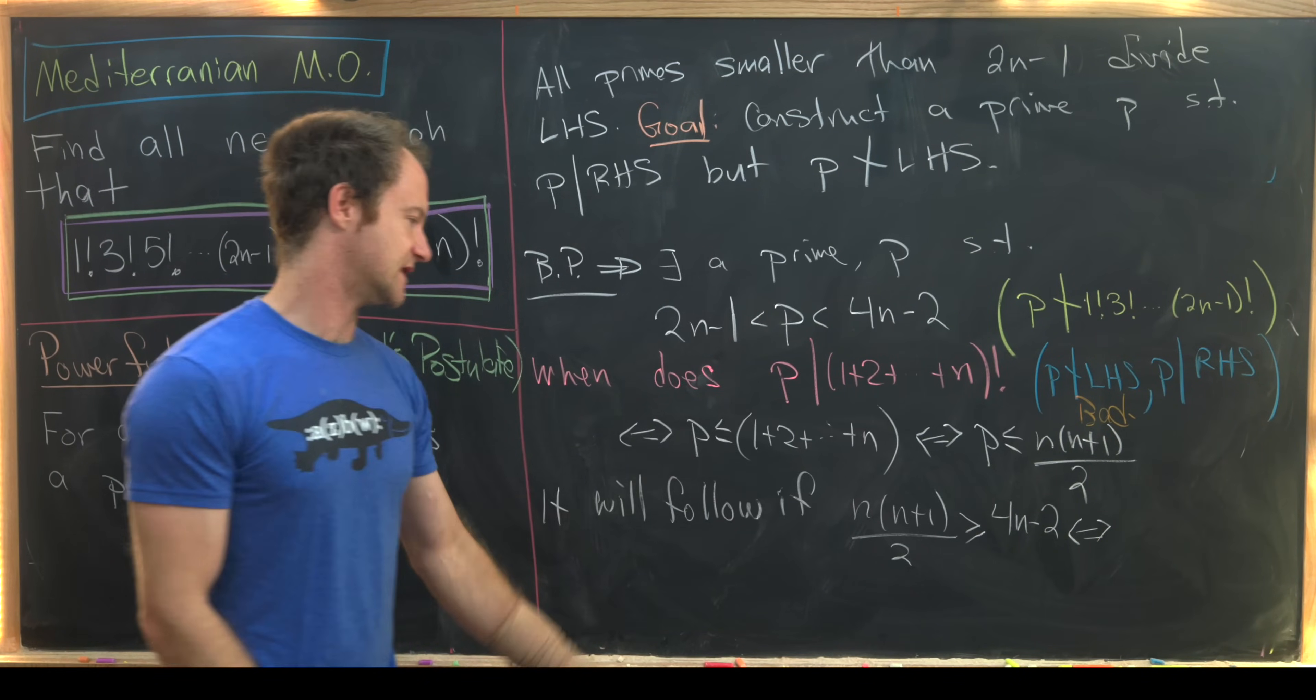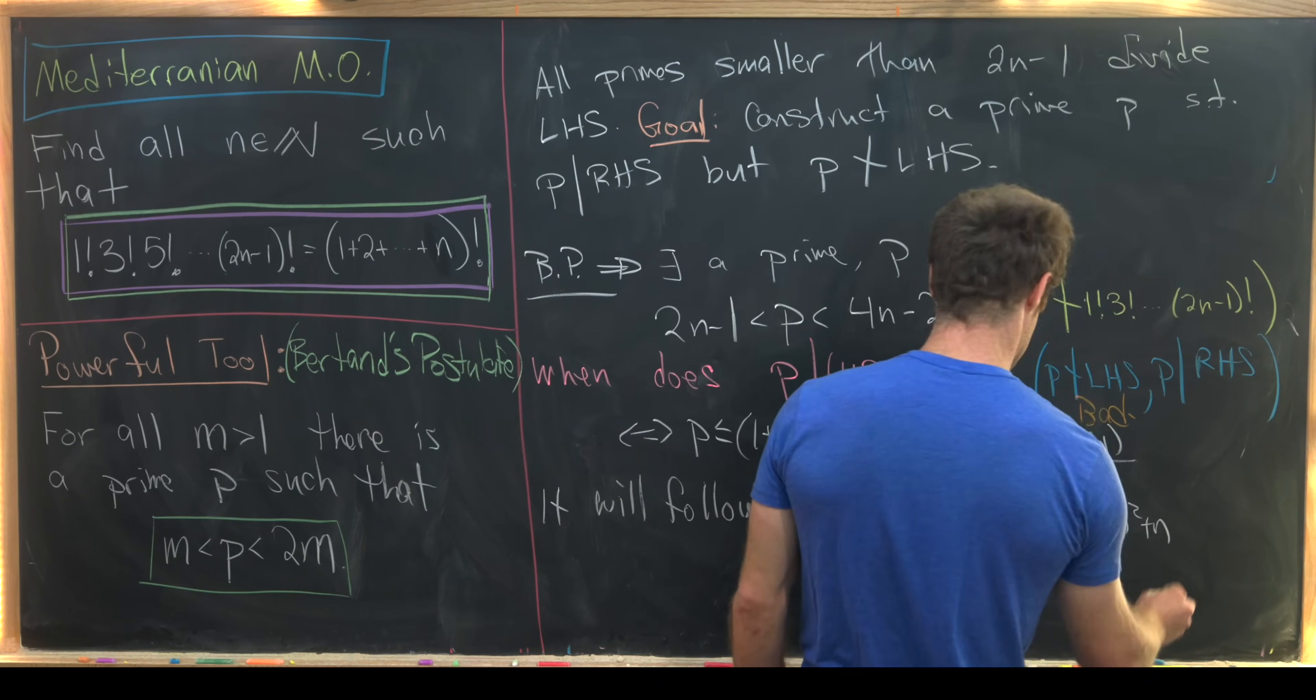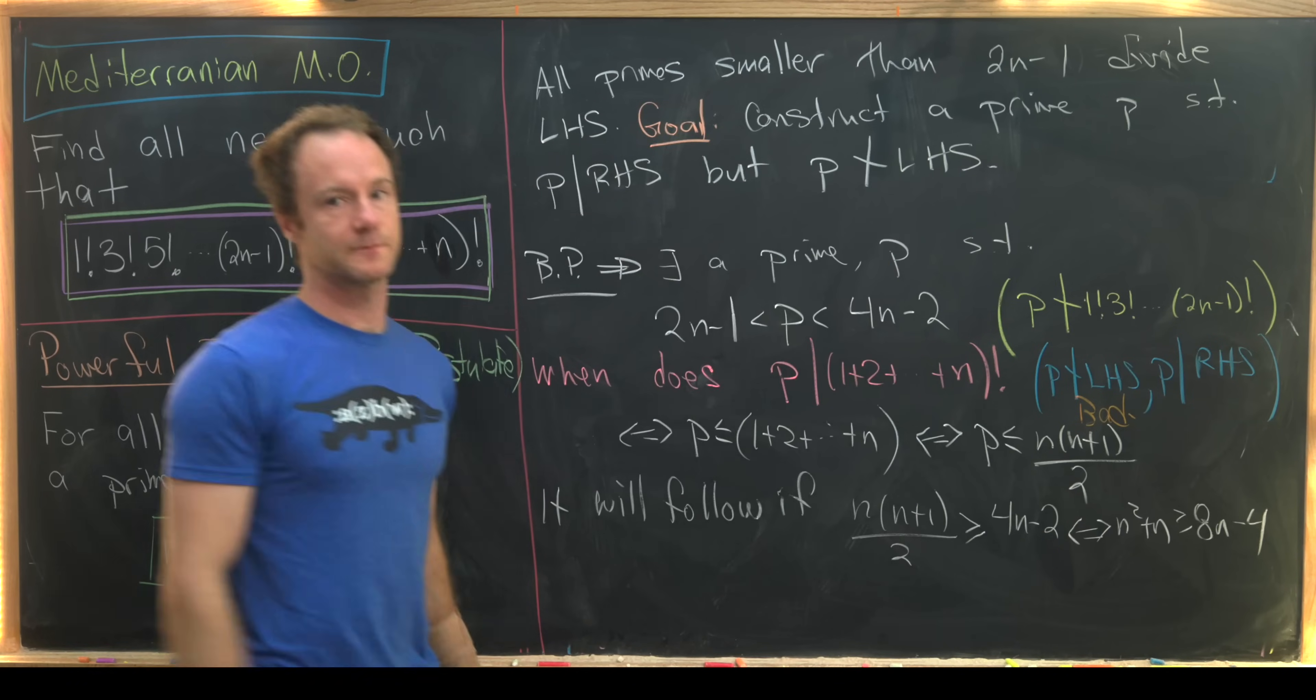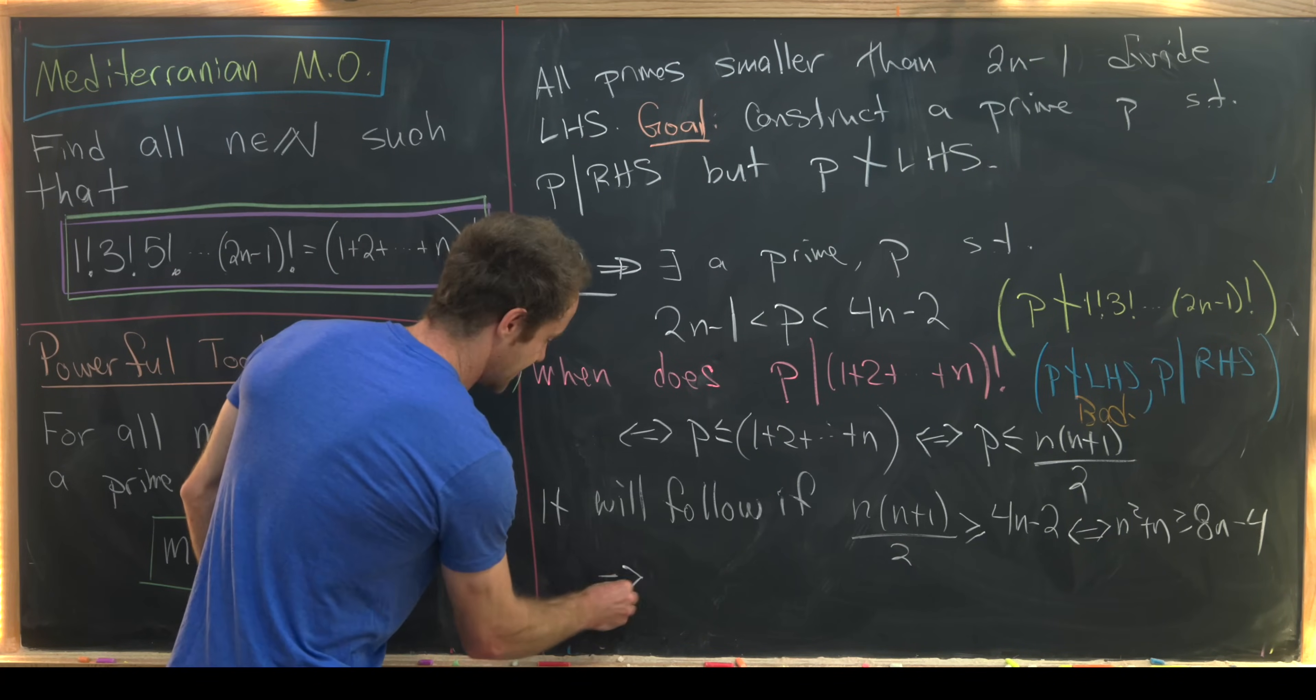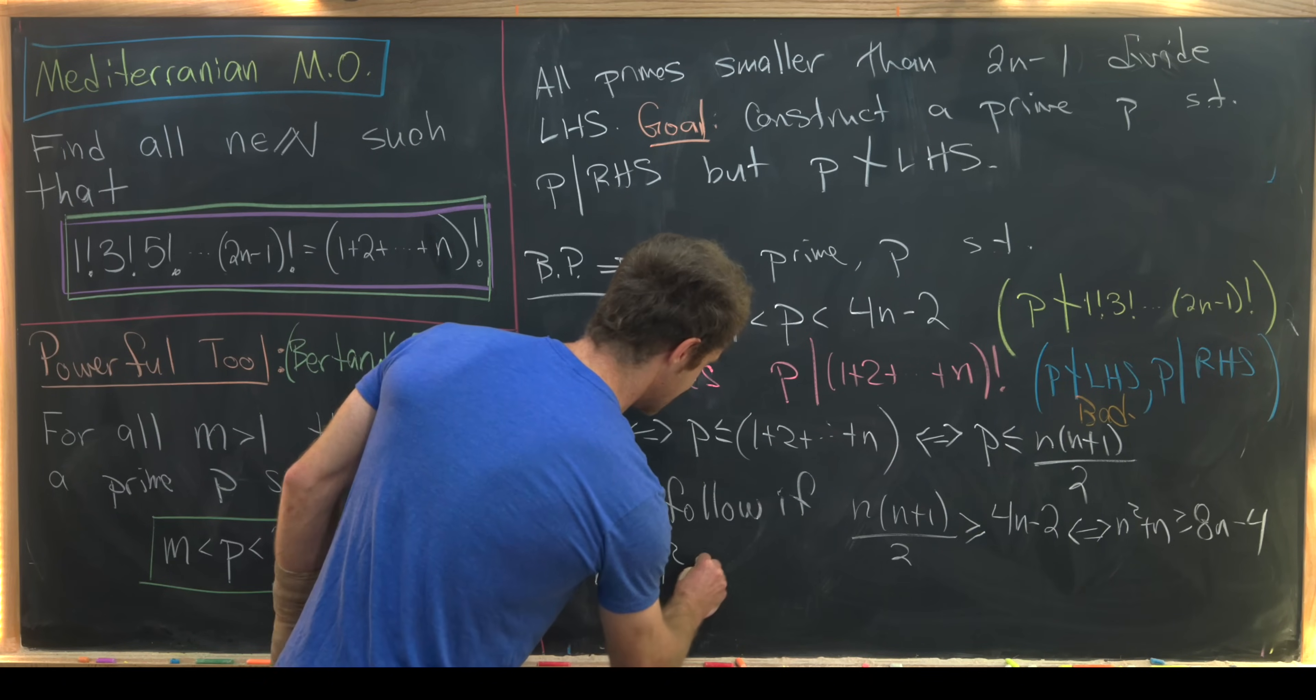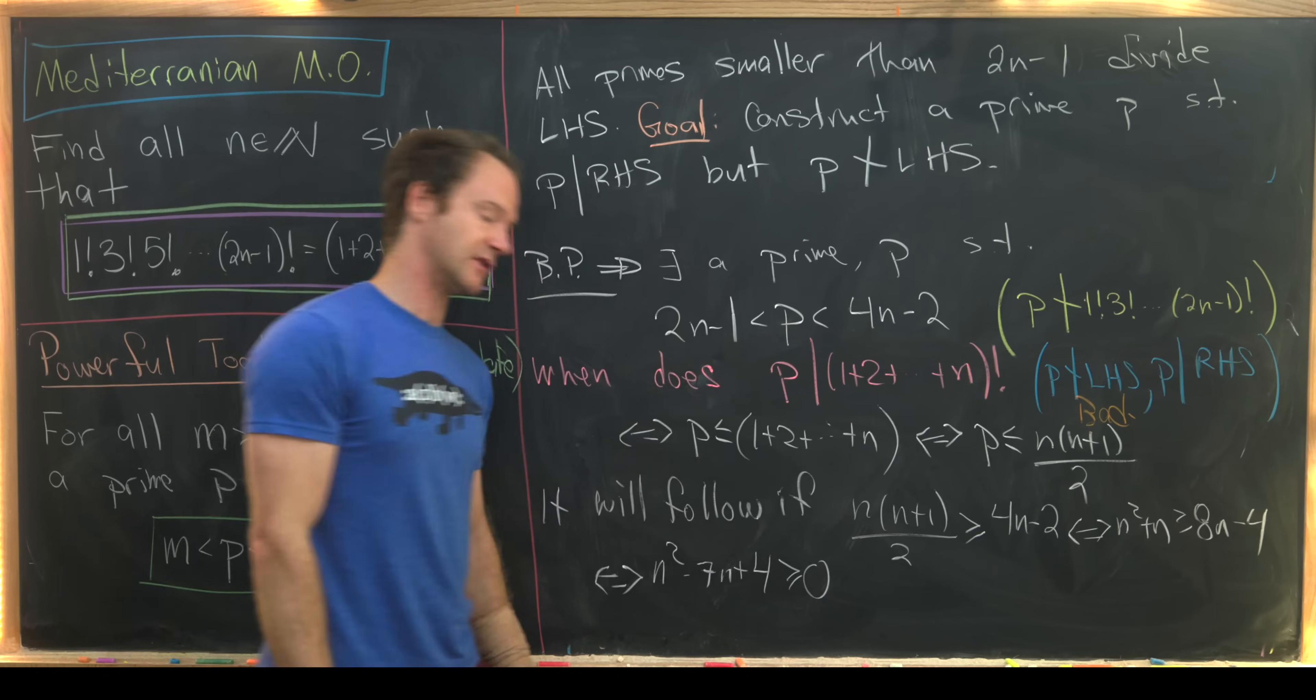So notice that this occurs if and only if n squared plus n is bigger than or equal to 8n minus 4, which occurs if and only if n squared minus 7n plus 4 is bigger than or equal to 0.